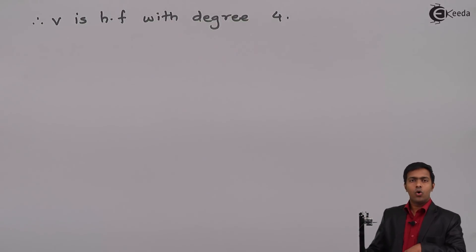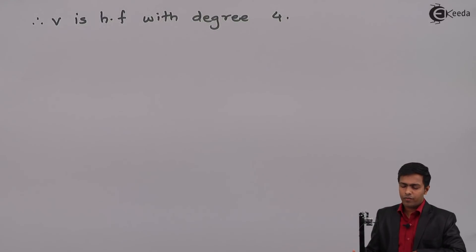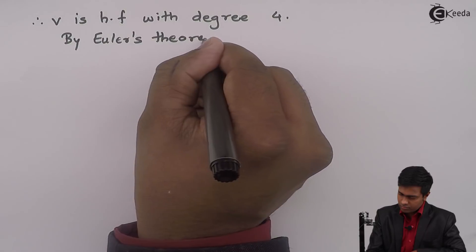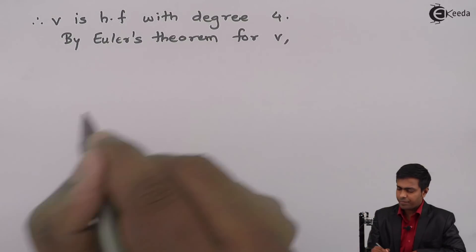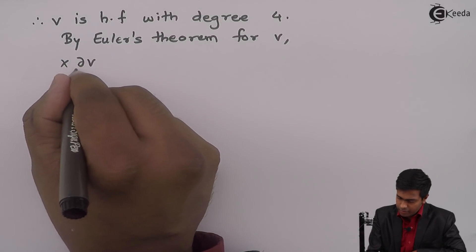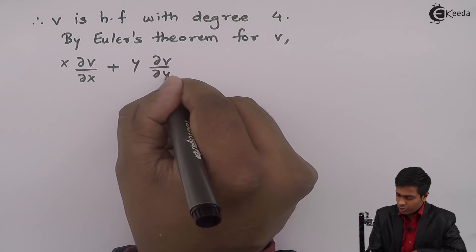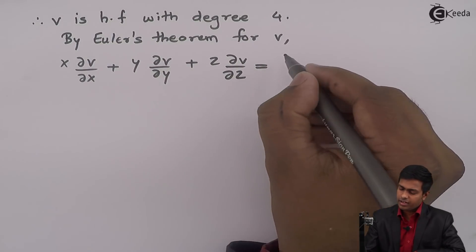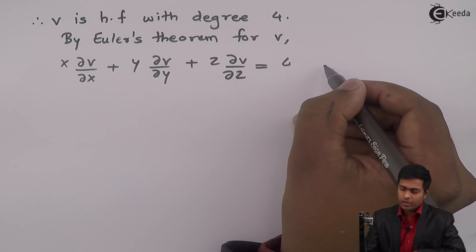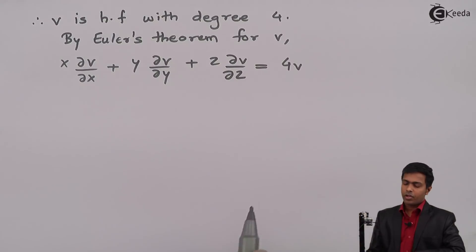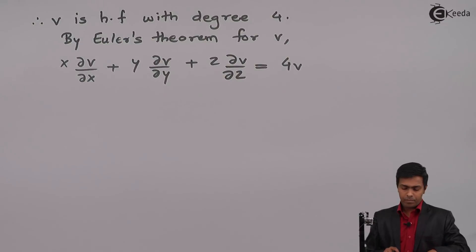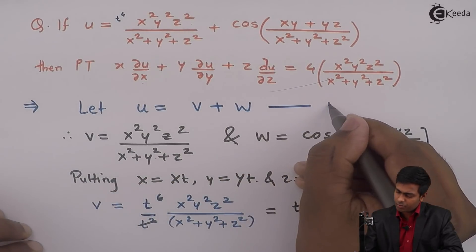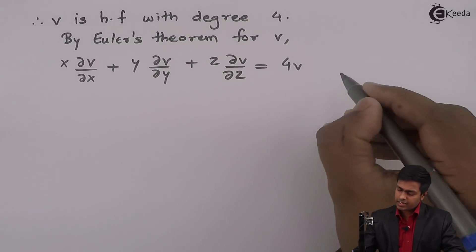Since v is a homogeneous function, we can apply Euler's theorem for v. By Euler's theorem for v, x∂v/∂x + y∂v/∂y + z∂v/∂z = n·v, where n is the degree 4. So we get 4v. We call this equation number 2, and the relation u = v + w is equation number 1.